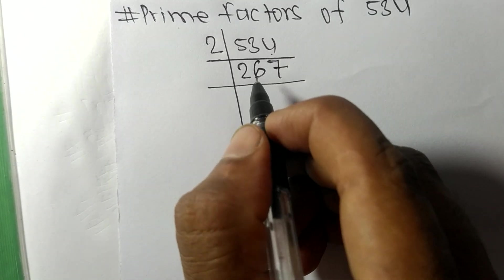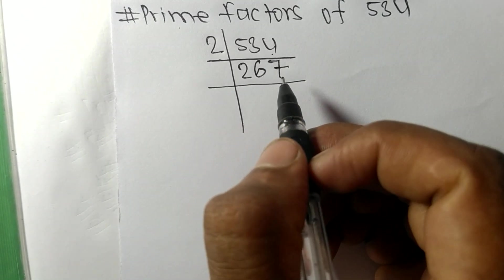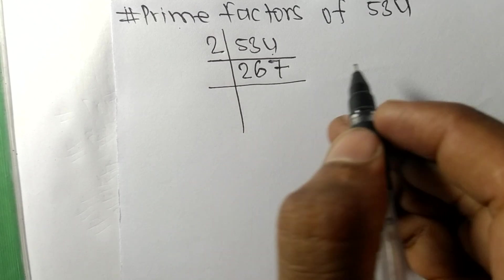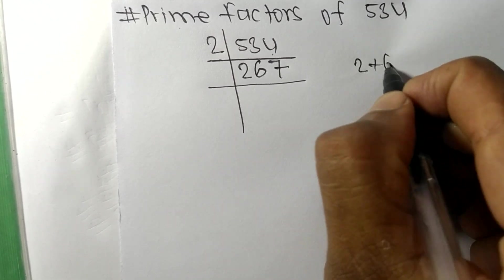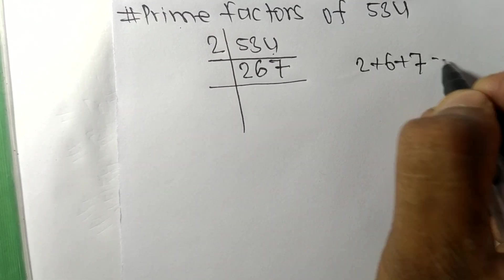When we add all these digits—2 plus 6 plus 7—we get 15. Since 15 is exactly divisible by 3, 267 is also divisible by 3.